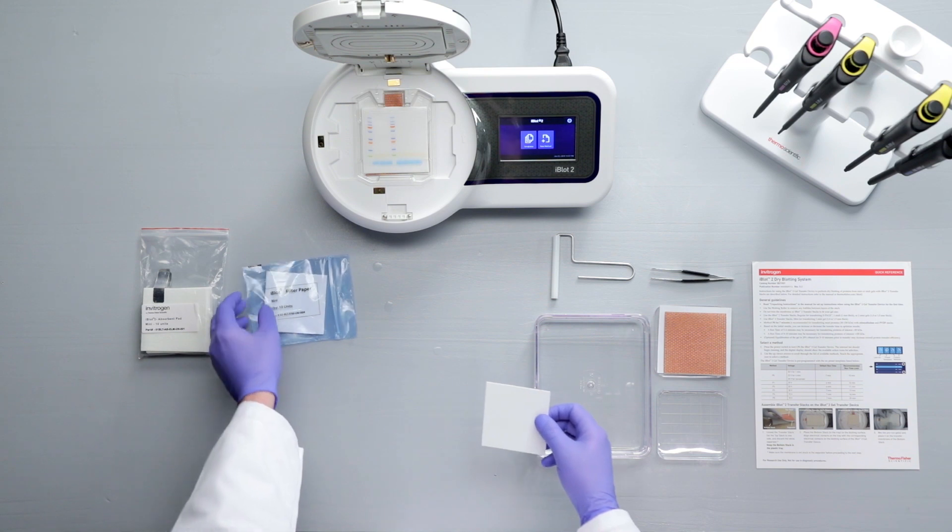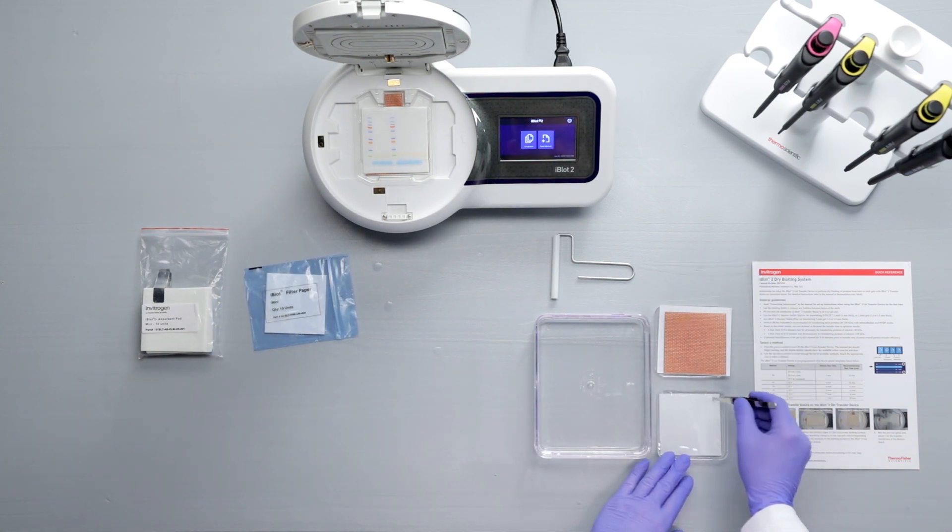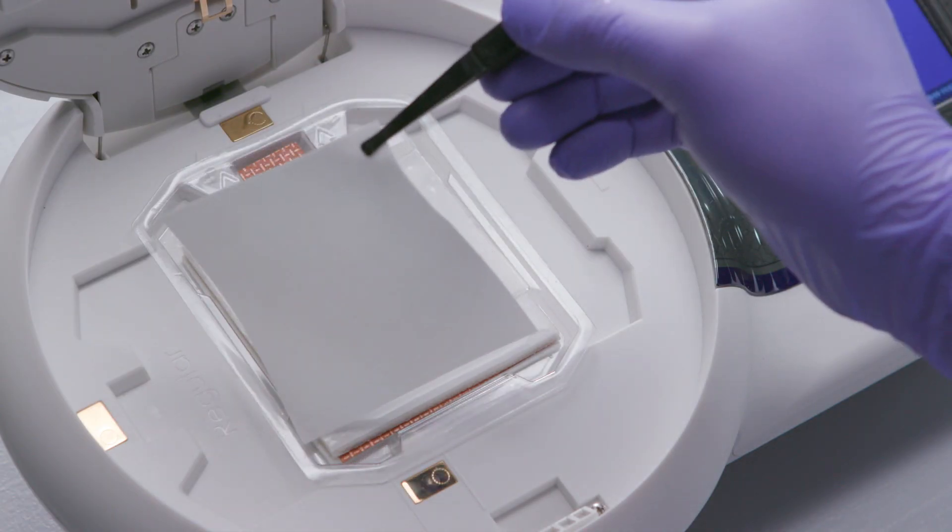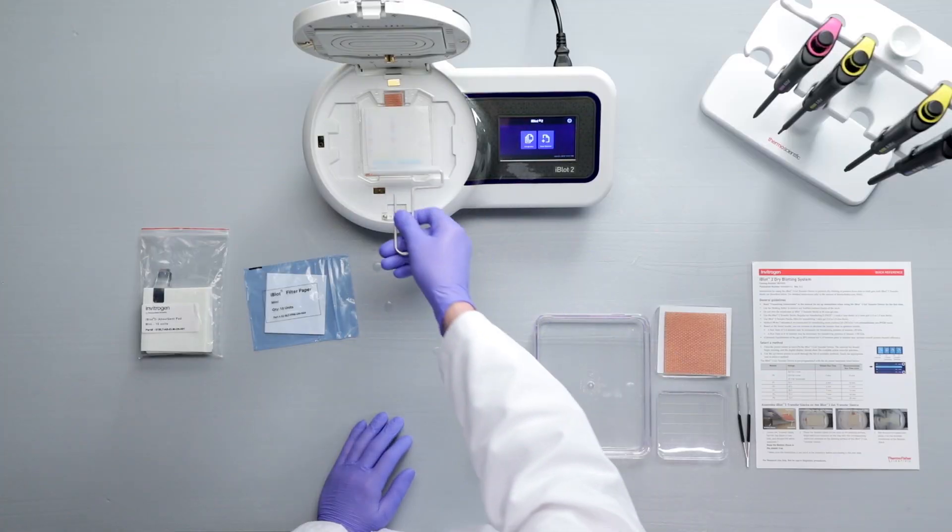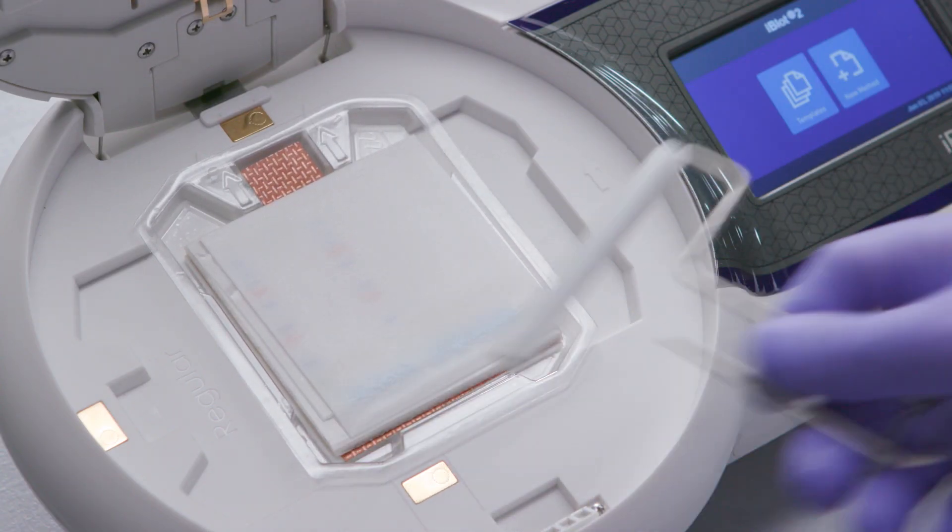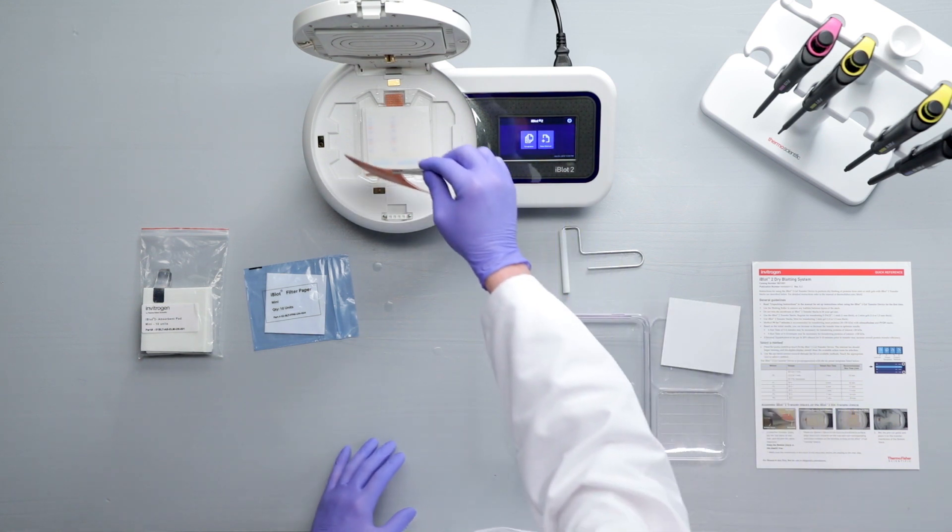Pre-soak an iBlot filter paper with deionized water and place it on top of the gel. Then, remove air bubbles using the roller. Place the top stack over the pre-soaked filter paper and remove air bubbles using the roller.